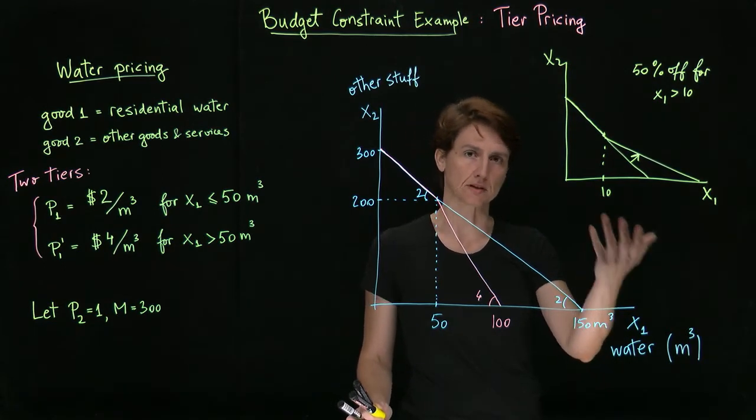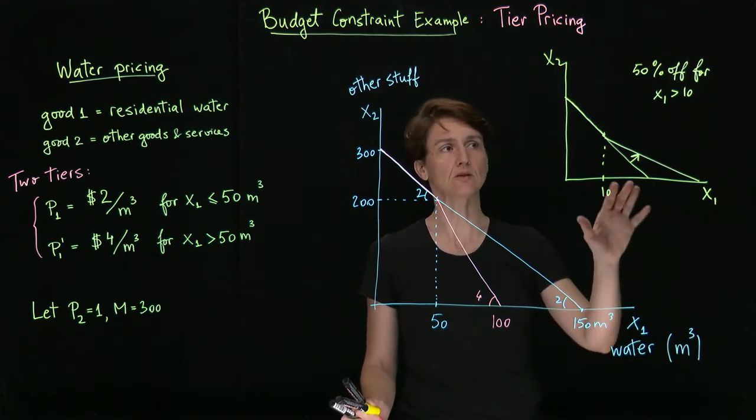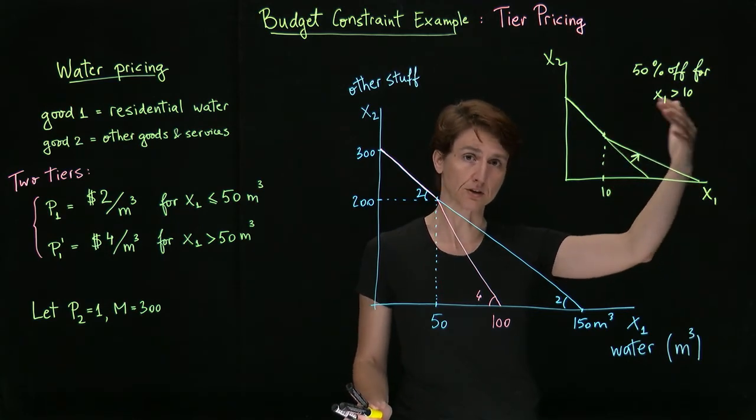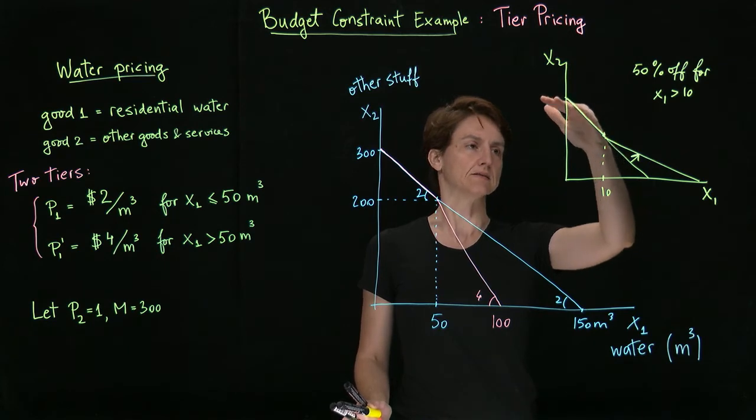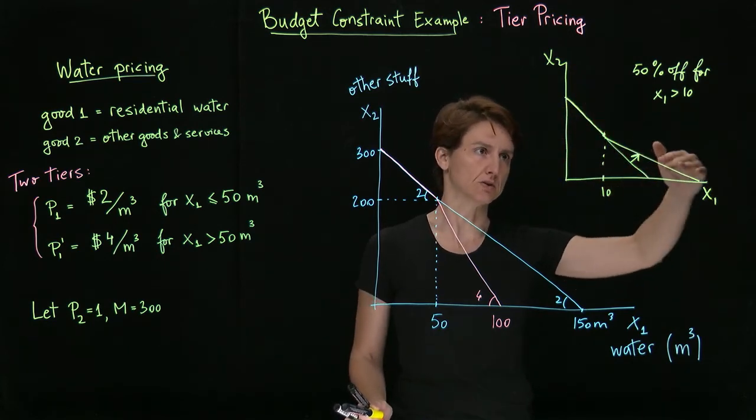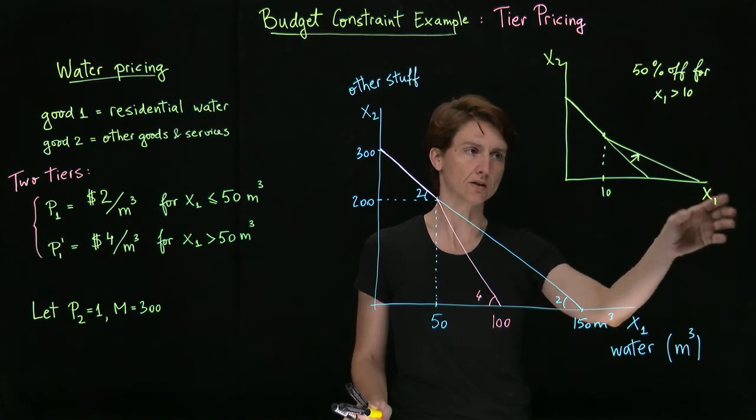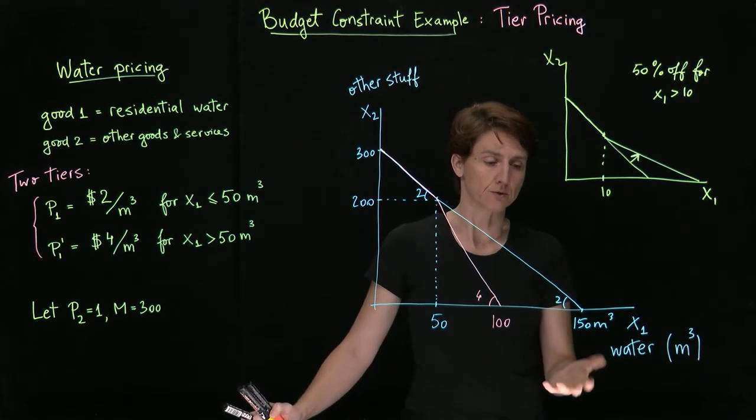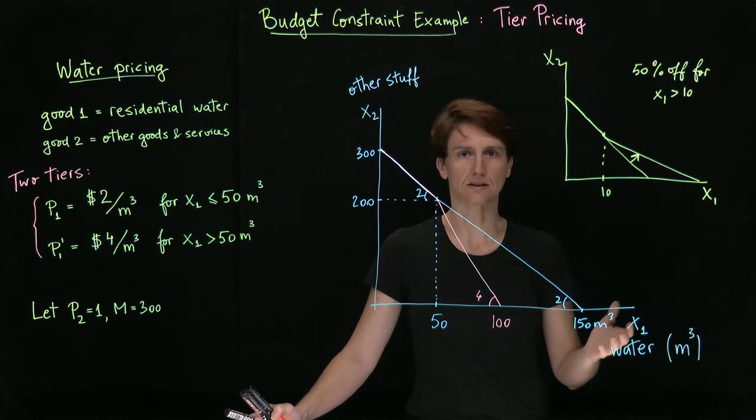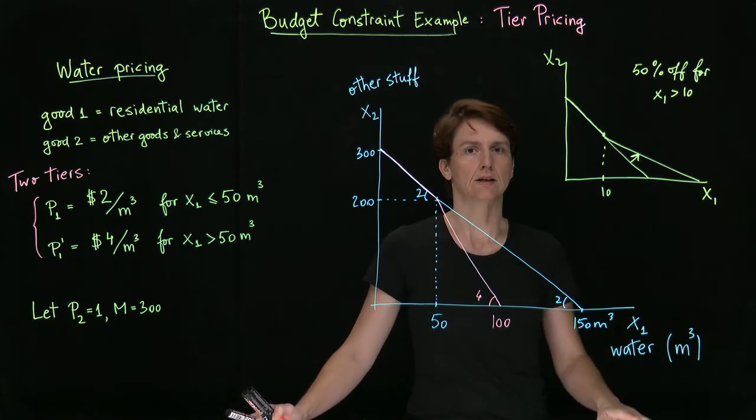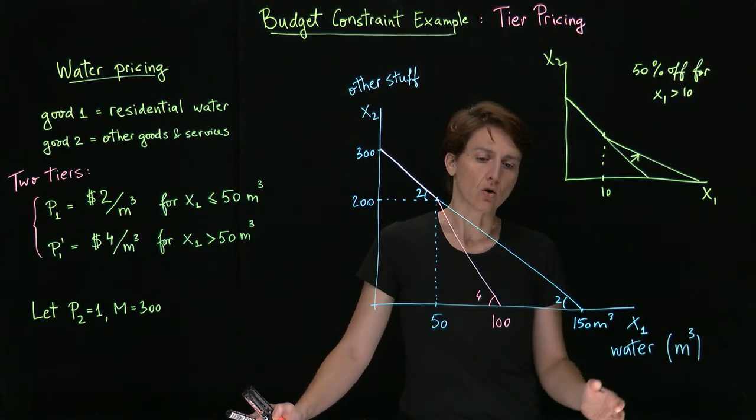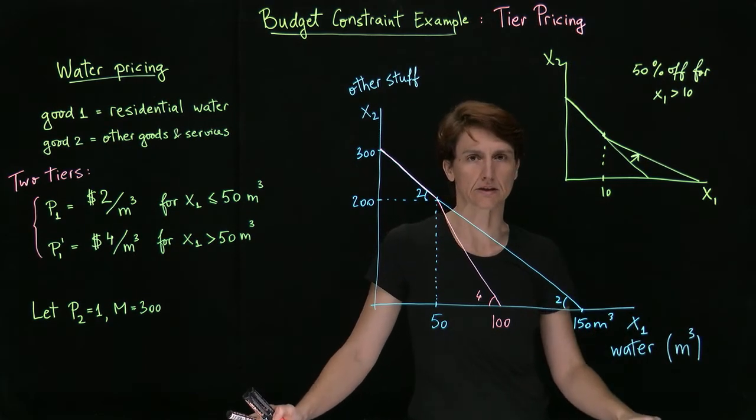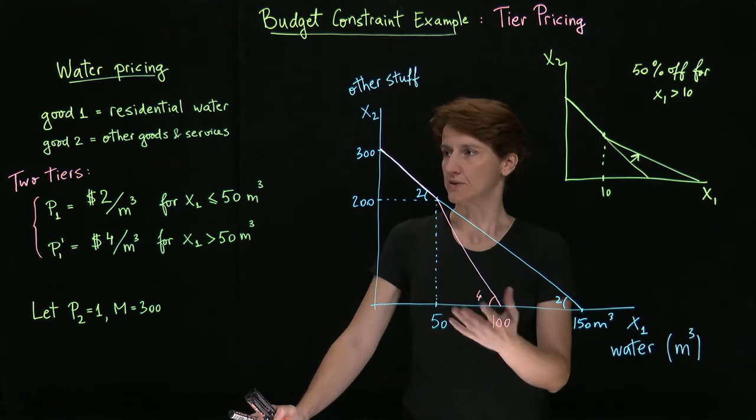That was also a type of tiered pricing, but it was different in that when you consume more, the price per unit becomes lower, whereas for water, when you consume more, the price per unit is higher. What accounts for the difference? Well, it's about the purpose of that differential pricing. For a commercial firm trying to sell merchandise, the goal is to get consumers to spend more on the good, right? And lowering the price will cause the consumer to switch towards consuming more of good one, the firm's good, versus other goods.